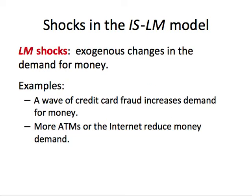Similarly, we can have LM shocks, which are exogenous changes in the demand for money. One example is a wave of credit card fraud, which increases the demand for money. Another example: if we have more ATMs, our demand for money goes down because we don't have to hold money all the time — we can withdraw whenever we like. So money demand falls with more ATMs. That's also an exogenous change in the demand for money.